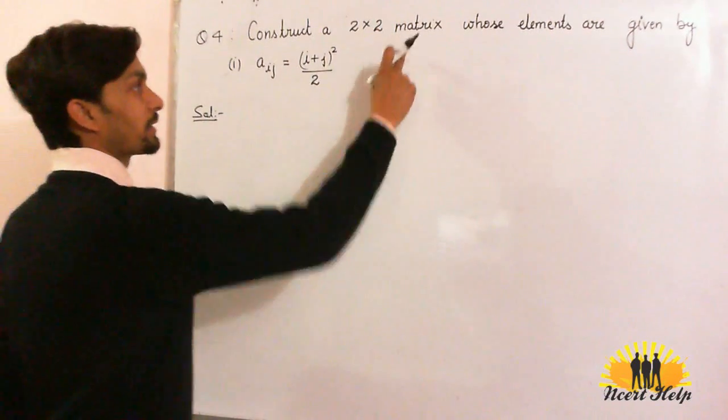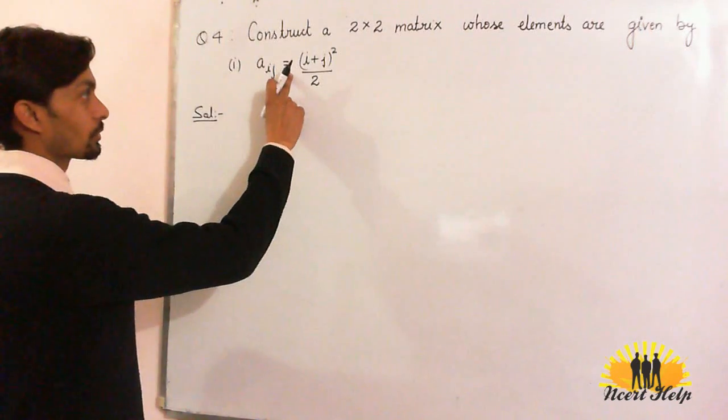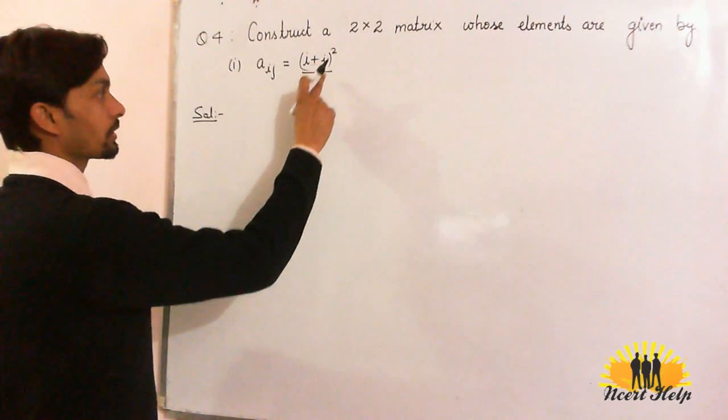Construct a 2×2 matrix whose elements are given by the formula Aij = (i+j)² divided by 2.